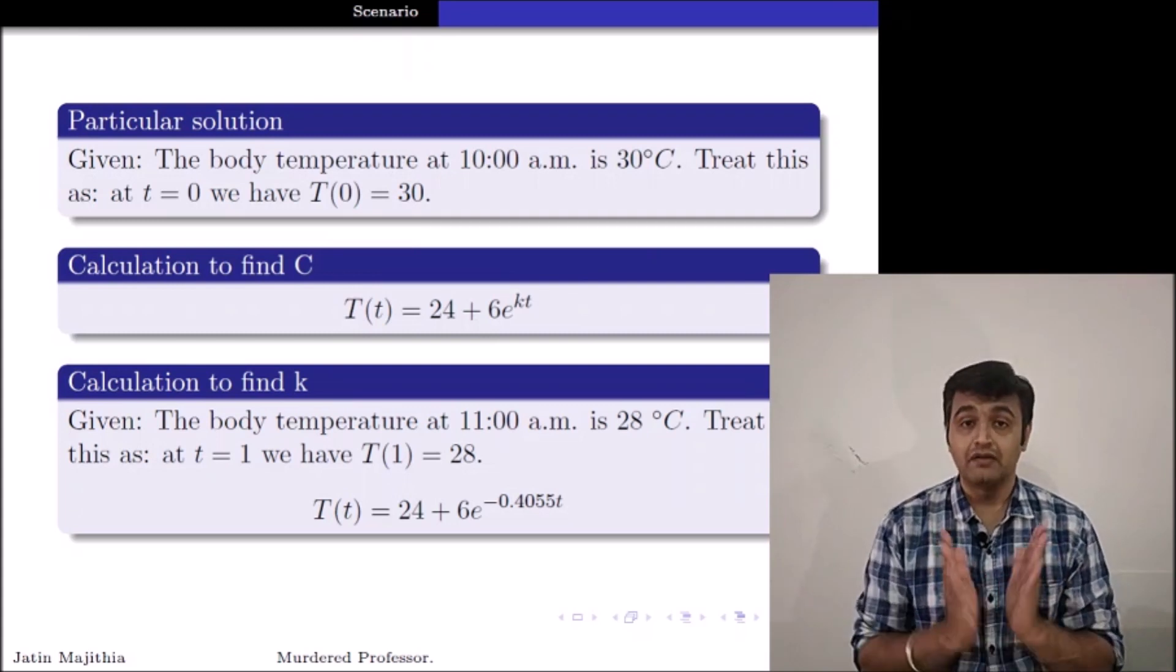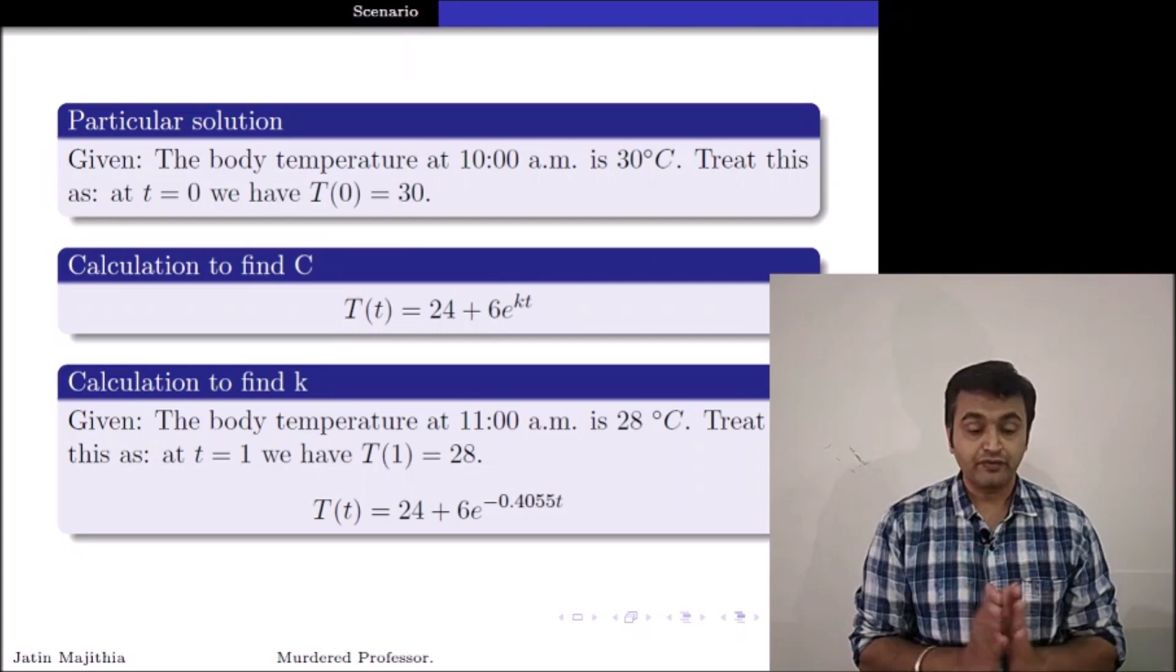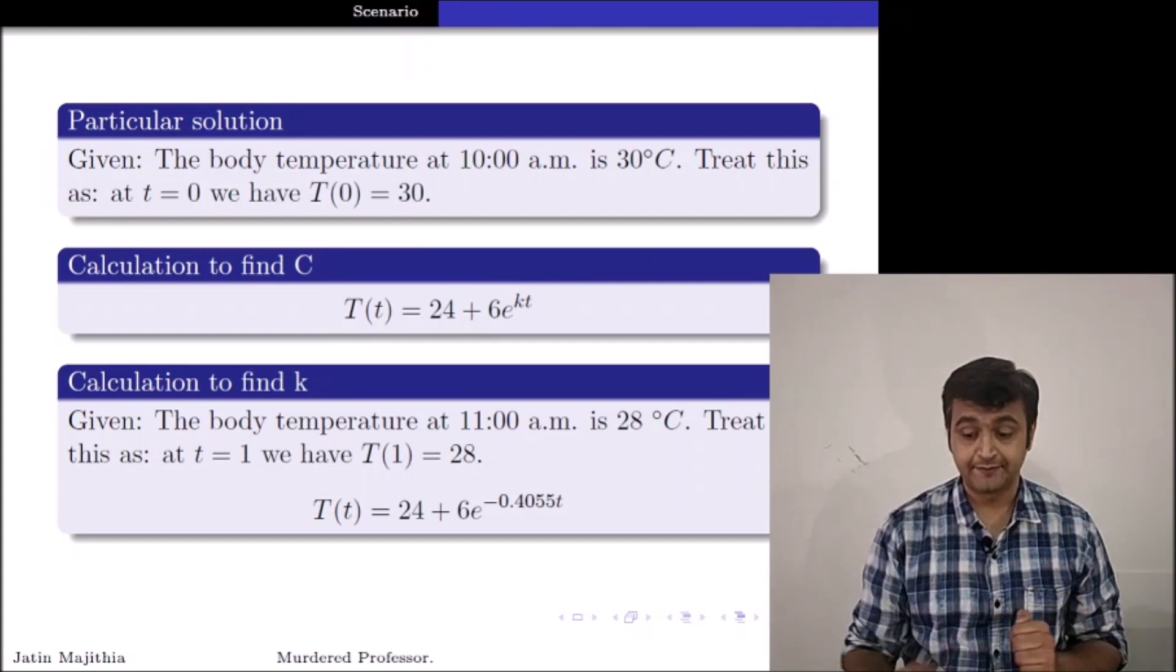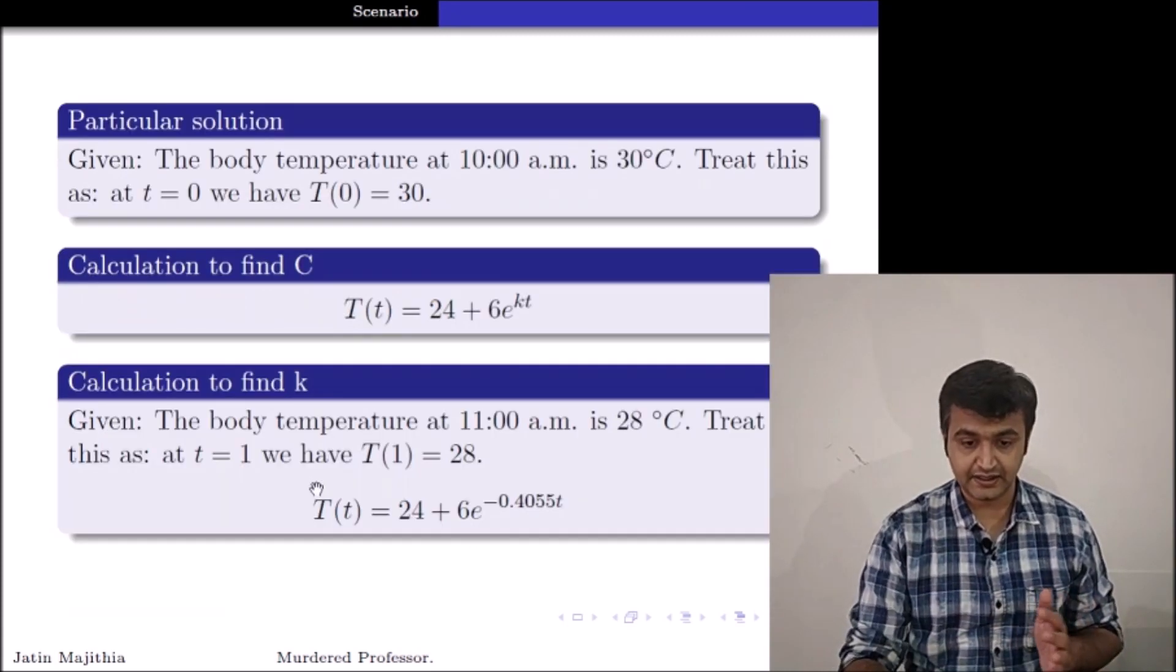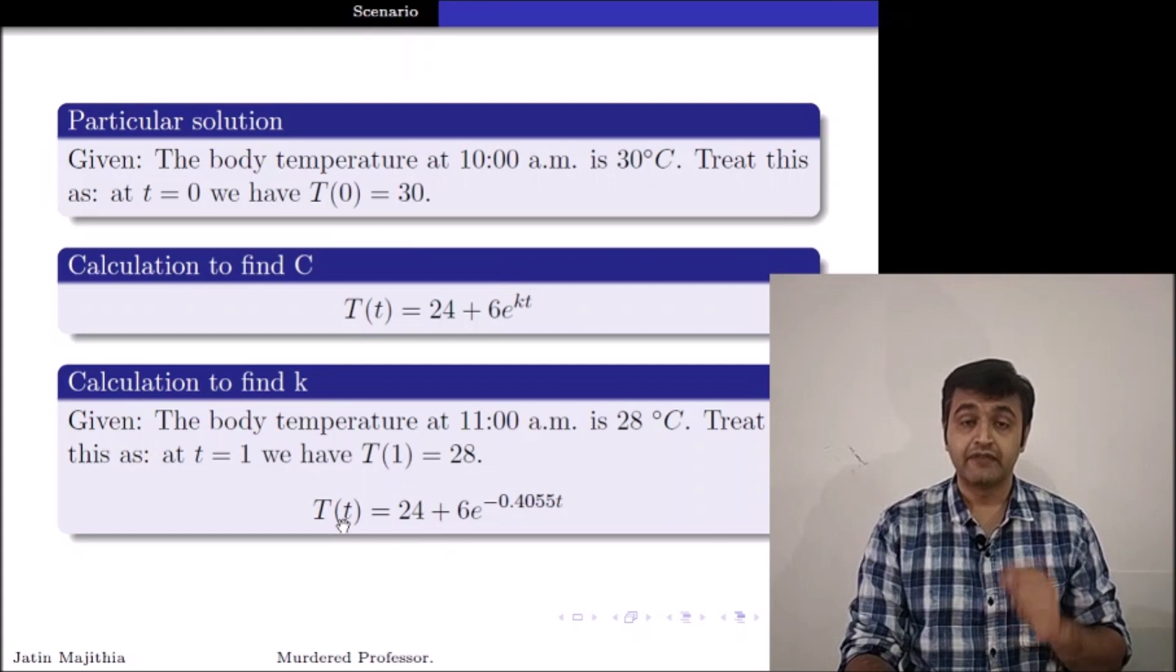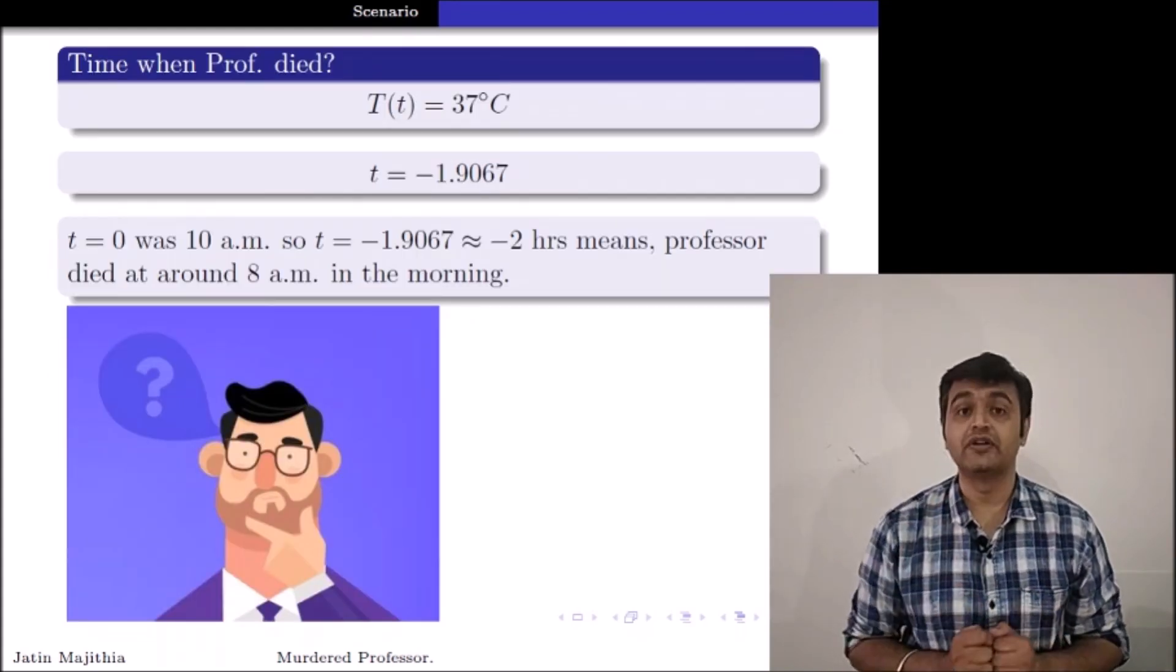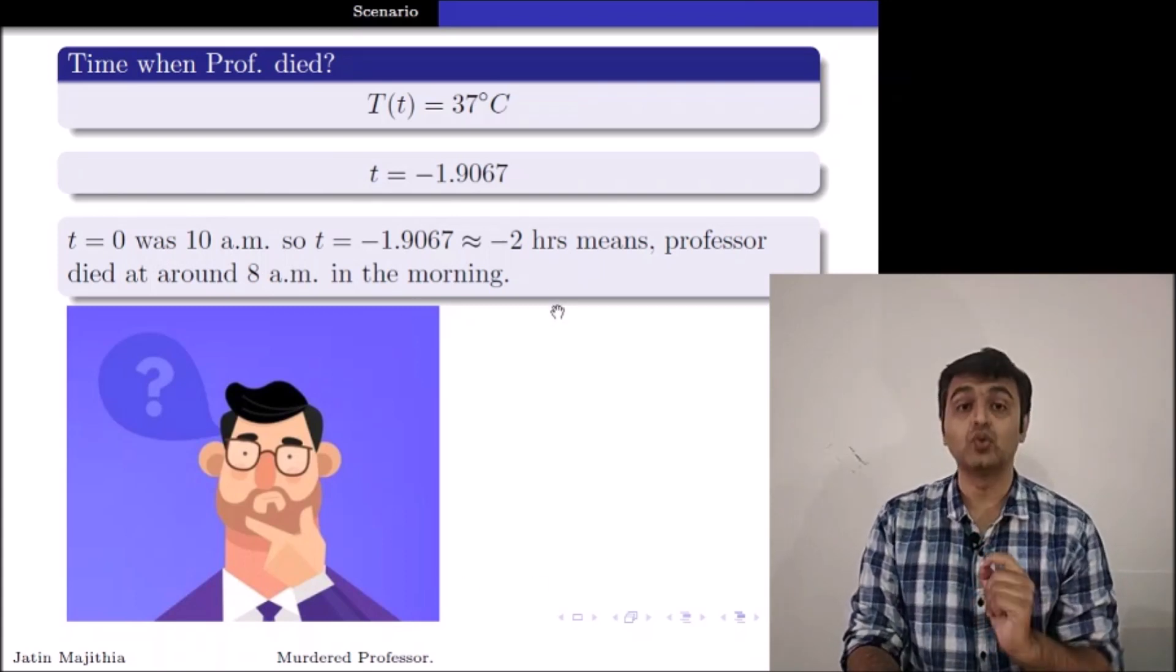Now, what is my aim? I want to know when my professor died. So what we know is the temperature of the body is 37 degrees Celsius. So if I replace my capital T by 37 degree Celsius in this last equation, if I replace my capital T by 37 degree and doing the calculation, I can find my small t. And if I do the calculation, it is coming out to be approximately 2 hours.